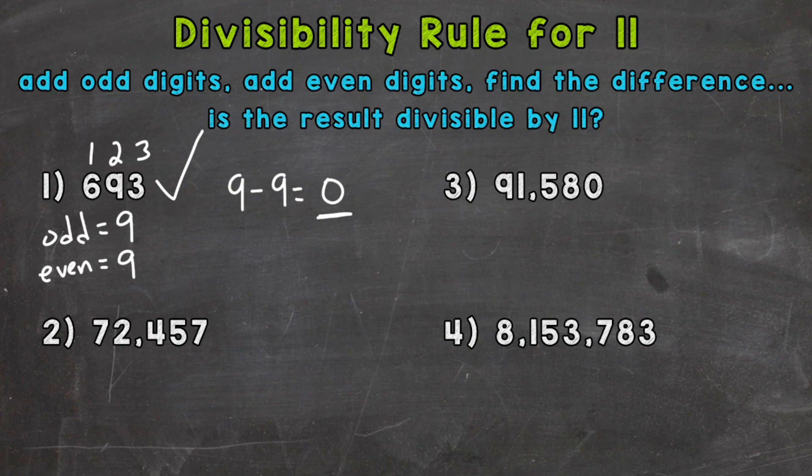Let's try this again with number 2. So we have 72,457. So let's count our digits, 1, 2, 3, 4, and 5.